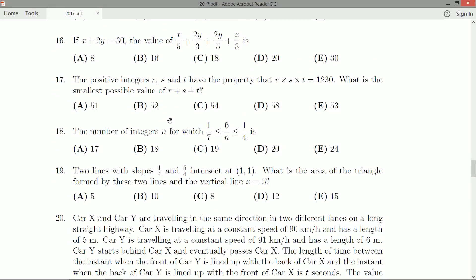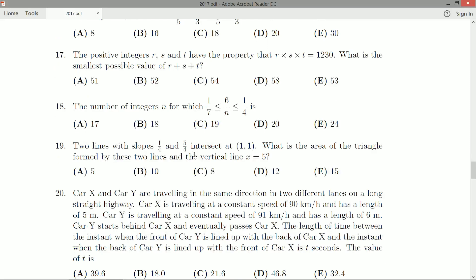Anyway, we're back, we're thinking about math now. Question 18: the number of integers n for which 1/7 is less than or equal to 6/n less than or equal to 1/4.